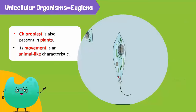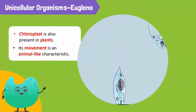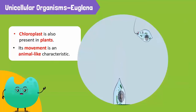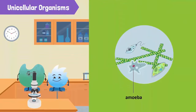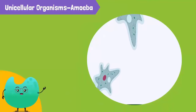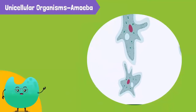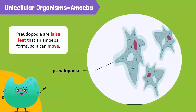These cells can move, which is why we say they have animal-like characteristics. This one here is an amoeba. It can change its shape and move with the help of pseudopodia. Pseudopodia are false feet that an amoeba forms so it can move.